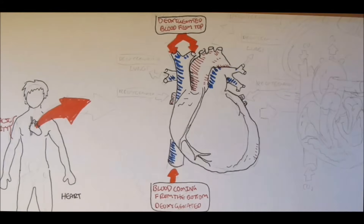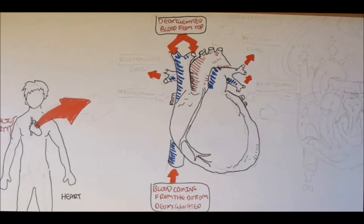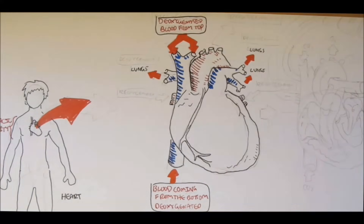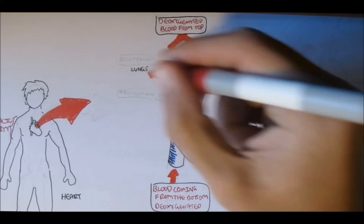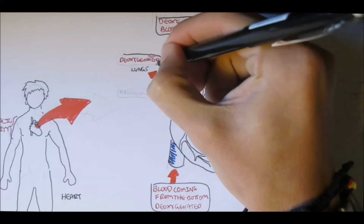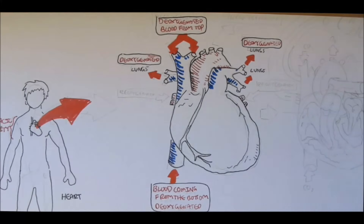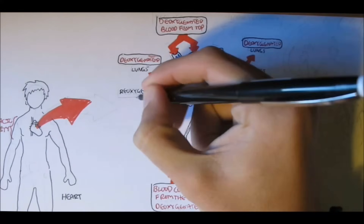The de-oxygenated blood will come into the heart from the right side, go through the heart, and then leave through these arteries into the lungs, known as the pulmonary arteries — because pulmonary means lungs. The de-oxygenated blood can then be re-oxygenated, because when we breathe in, we also breathe in oxygen, which will then replenish our de-oxygenated blood supply.